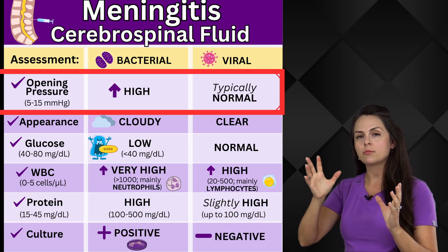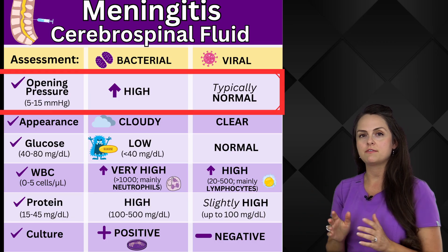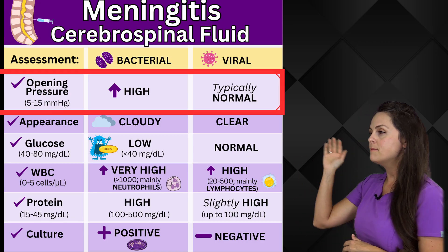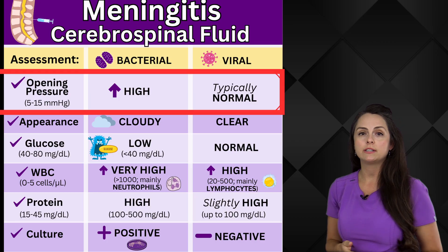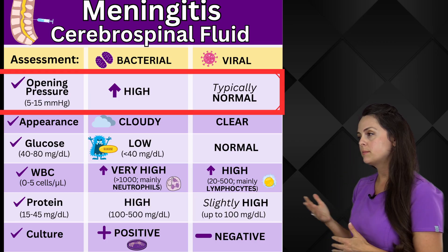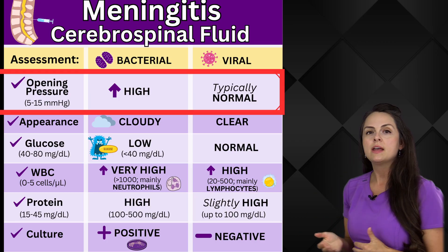Anywhere normal is about 5 to 15. In bacterial meningitis, it's going to be really high, whereas in viral, it's typically normal.